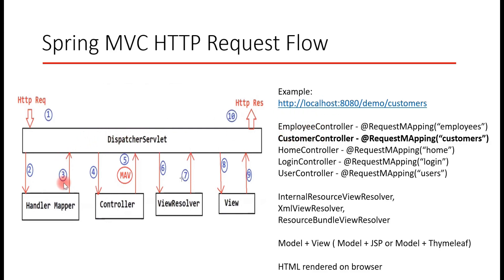Now the DispatcherServlet knows which controller is responsible to handle the request — this is the third step. Once the DispatcherServlet knows which controller is responsible, it will send the request to the corresponding controller. In our case, the CustomerController is responsible to process this particular request — this is the fourth step. The controller will process the request, create model data, and return a model and view to the DispatcherServlet. For example, to get a list of customers from the database, the controller stores the customer data into a model and returns that model and view — this is the fifth step.